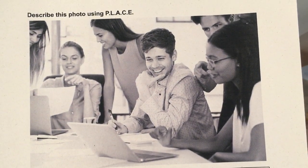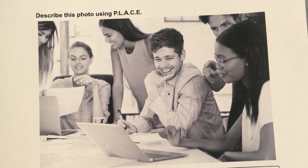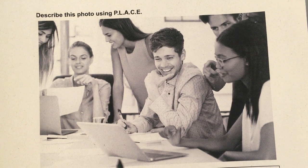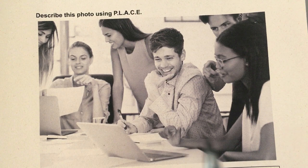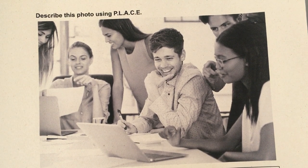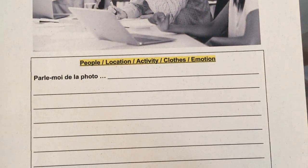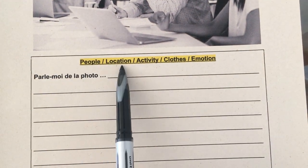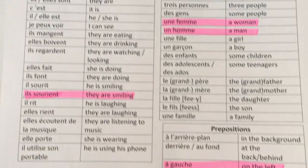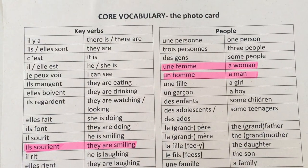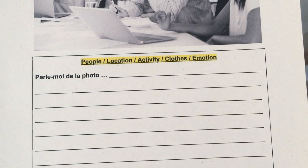So your final task is to look at this photo card which is from a previous GCSE again. It's a bit similar to the first one — we've got laptops, a mixture of men and women, and they could be in a cafe or a library. Now it's your turn to write a description of this photo using People, Location, Activity, Clothes and Emotion. Remember that in your booklet you have got the core vocabulary list — make sure you use that. And good luck.